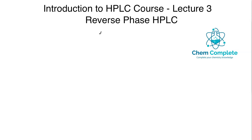From the third lecture forward, we are going to be discussing more specific targeted information for HPLC. This lecture will be reverse phase, and then we may have a lecture on ion exchange and on how pH can affect functional groups, especially amino acids. Today we are going to discuss reverse phase HPLC, which is arguably the most popular HPLC method out there. Anytime you hear people discussing a C18 column or aqueous and organic mobile phases, they're almost always referring to reverse phase HPLC.